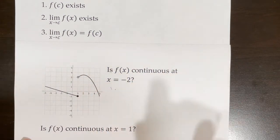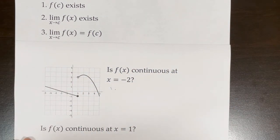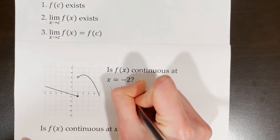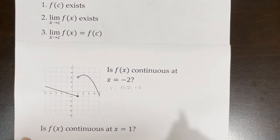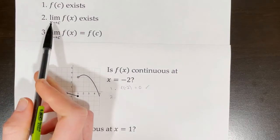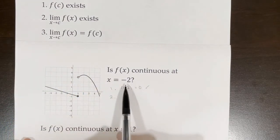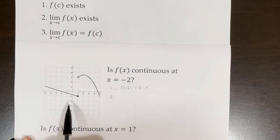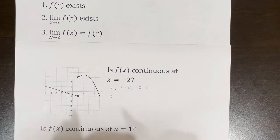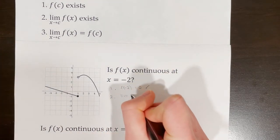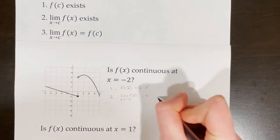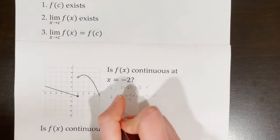First step is to determine that f of c exists. We can see on the graph that f of negative two equals zero — that one exists, check it off. The second condition: the limit of f of x as x approaches negative two. Coming in from the left side, x is approaching zero; coming in from the right side, x is approaching zero. So the limit of f of x as x approaches negative two equals zero. Zero is a number that exists — check that one off.